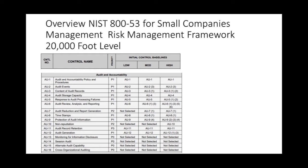Let's walk through AU, the audit sub-families of controls. As you can see on the slide at the top, it's low, moderate, and high. So depending on your system, these are the sub-families of this control you will implement. This is the audit and accountability family.